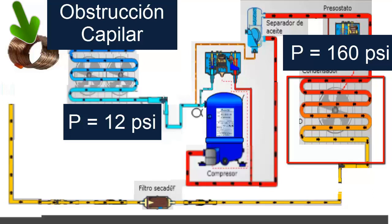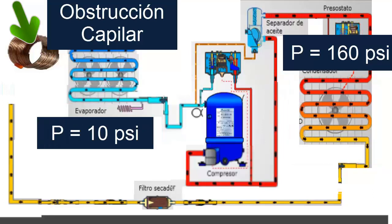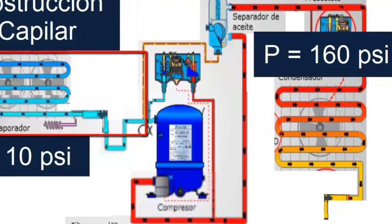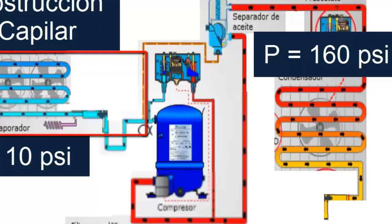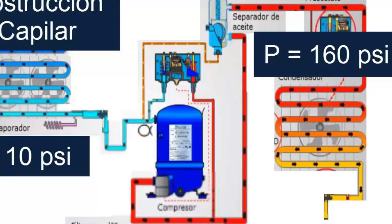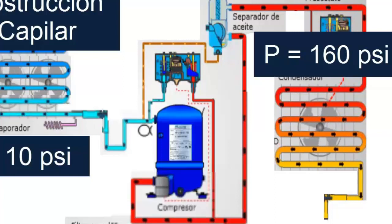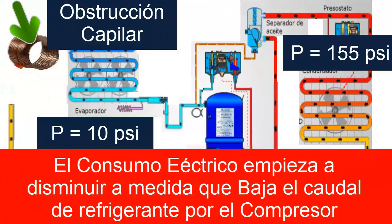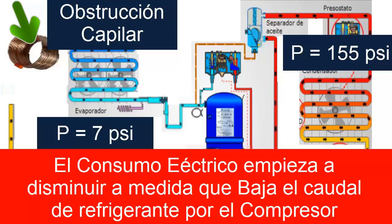But the following happens: as the compressor continues to suck, it sucks less refrigerant and the low pressure begins to drop even more. Now less and less refrigerant is sucked, therefore less and less refrigerant is discharged. Although the refrigerant comes out at high pressure, less quantity comes out, and each time the amount of refrigerant that the compressor is sending toward the condenser is less. Therefore, we are going to have less and less refrigerant reaching high pressure, and its effect in this area is going to be less.